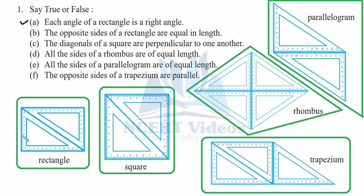Part B is again true. These are a pair of opposite sides, and similarly the other pair. The opposite sides of a rectangle are equal in length, therefore it is true.